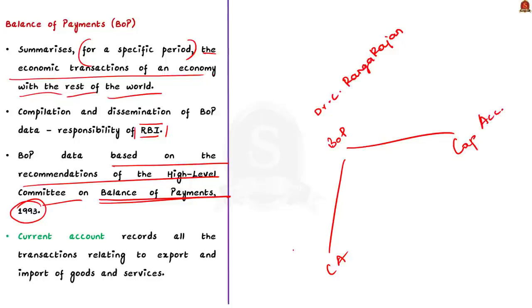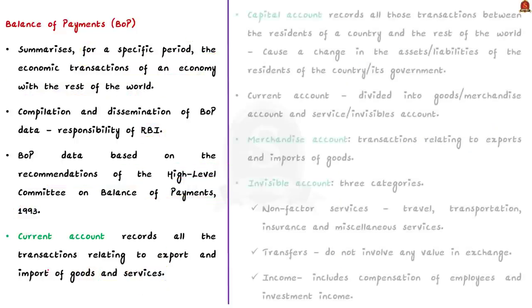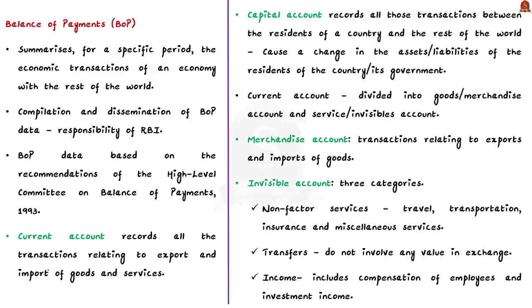The current account records all the transactions relating to trade in goods and services — that is, all transactions relating to export and import of goods and services. The capital account records all those transactions between residents of a country and the rest of the world in their assets or liabilities. These transactions cause a change in assets or liabilities of residents of the country or its government. In other words, the capital account reflects the net changes in financial claims on the rest of the world.